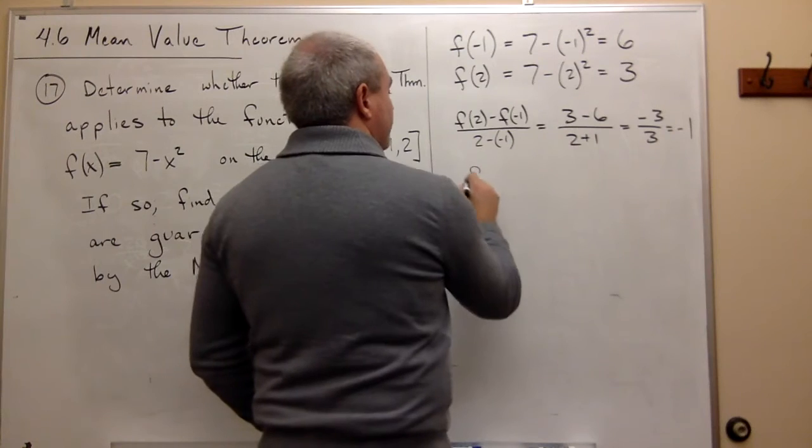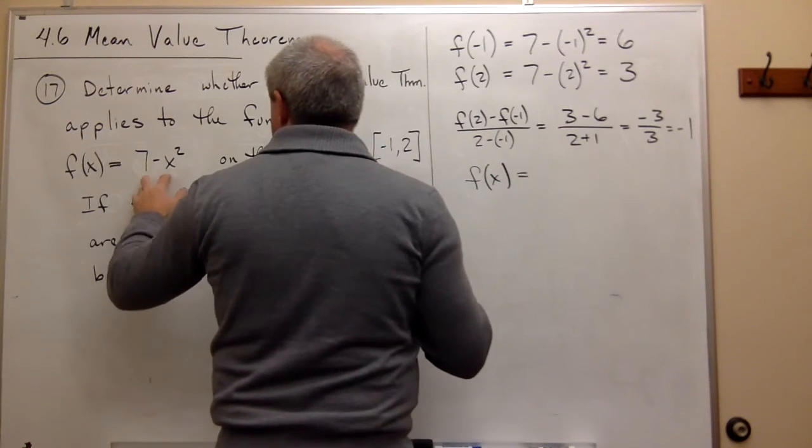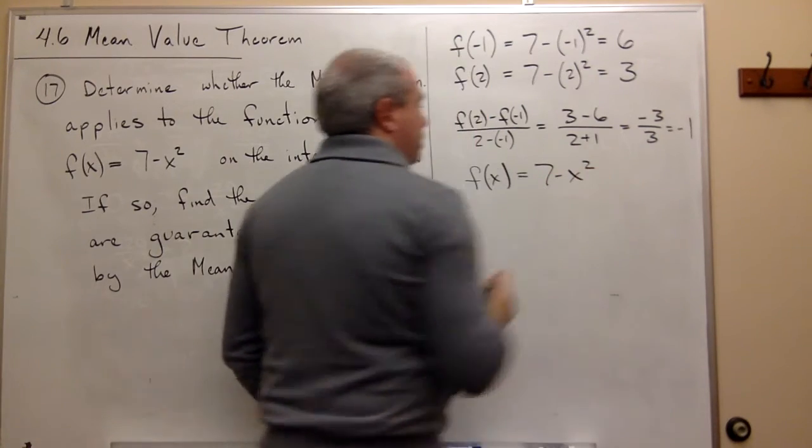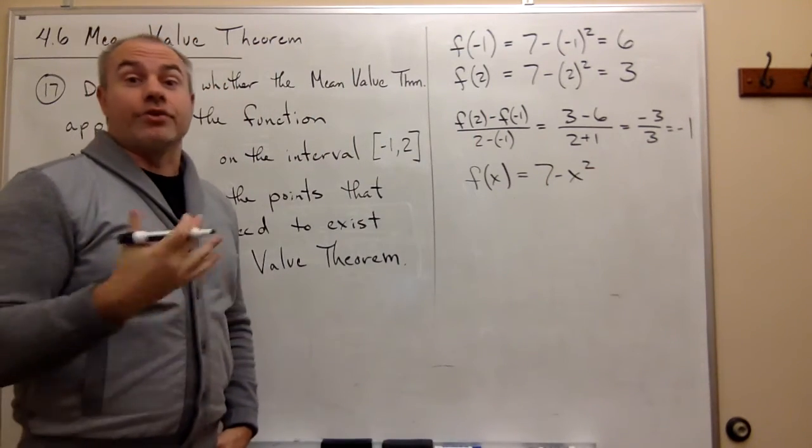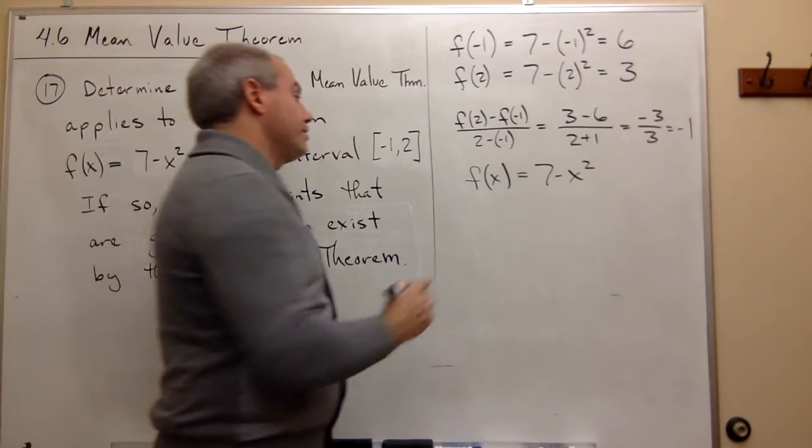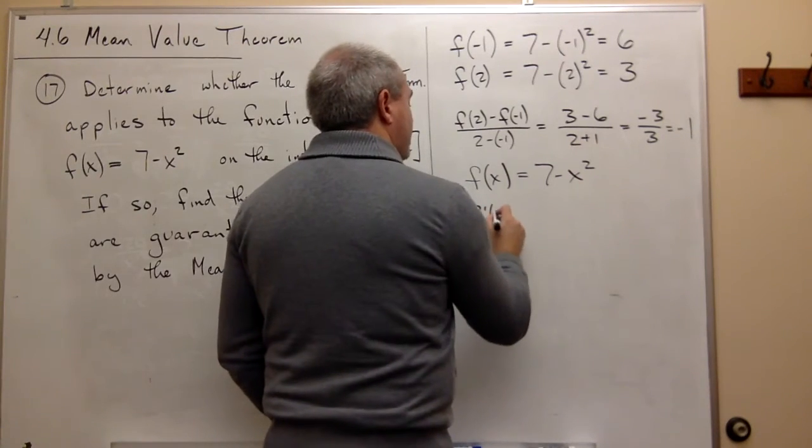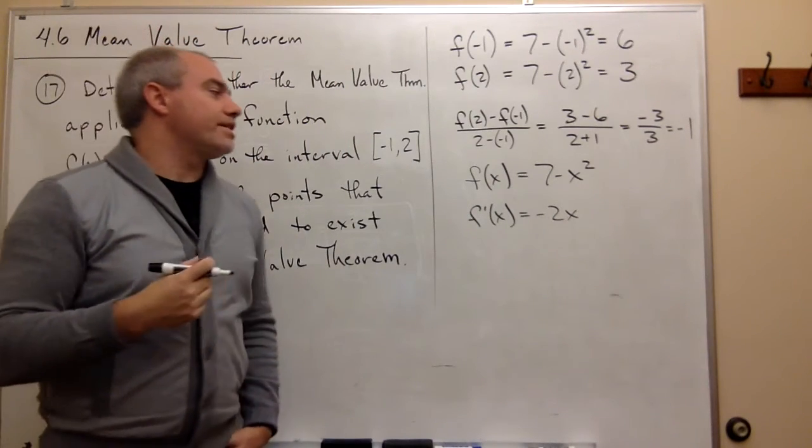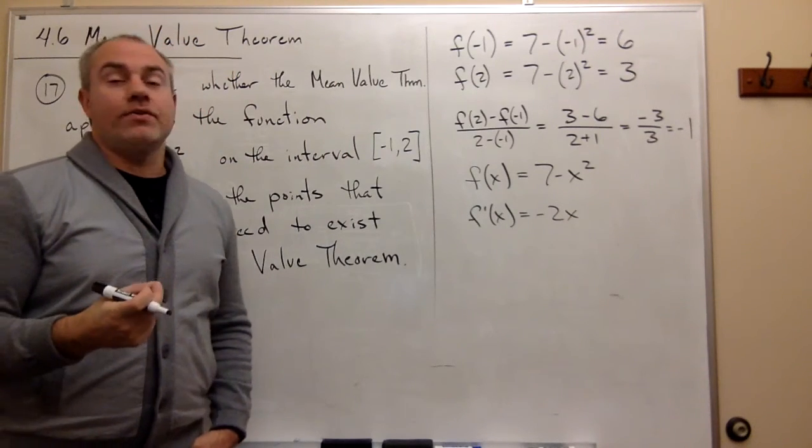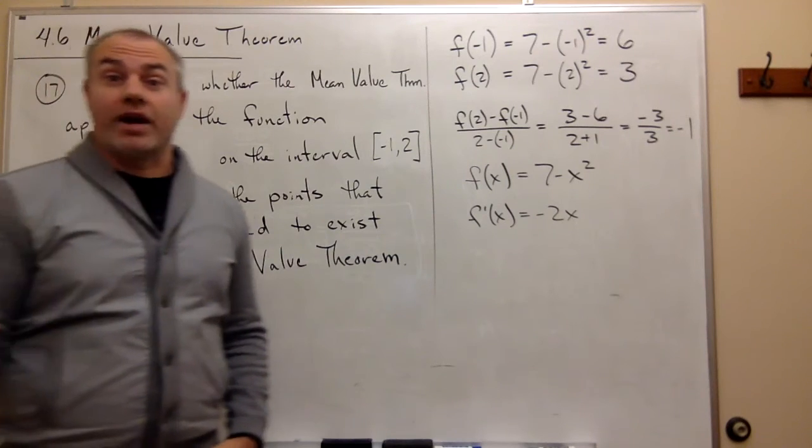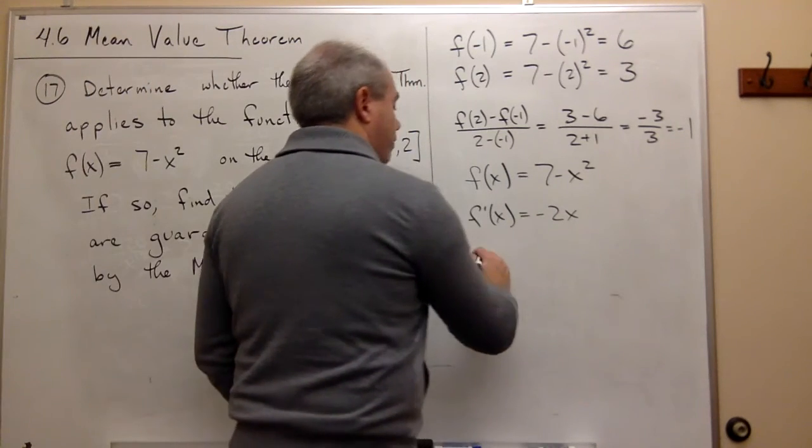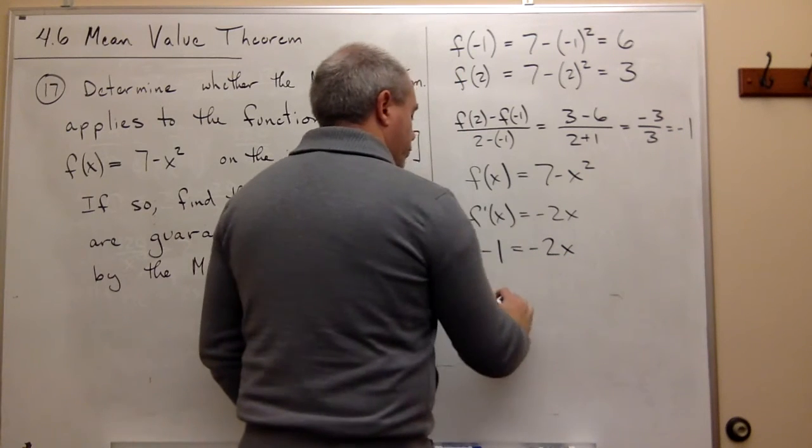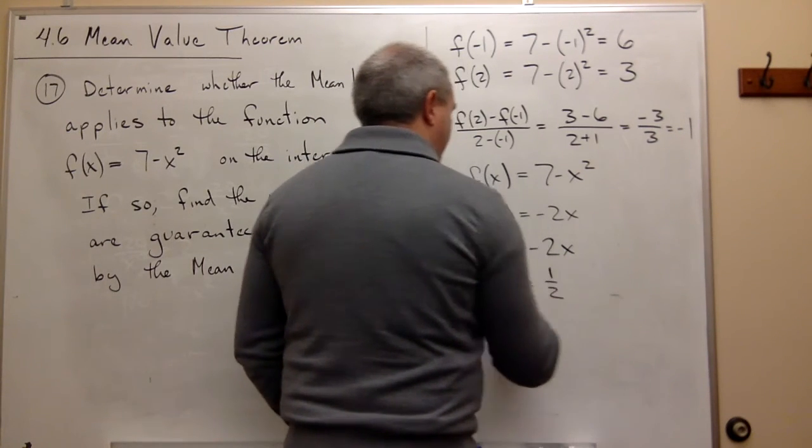So my function is f of x is equal to 7 minus x squared. So I want to take the derivative of that function, so I get that f prime of x is equal to negative 2x. And I want to set that guy equal to negative 1 and solve for x, which is pretty straightforward. So I get negative 1 is equal to negative 2x, which would mean that x would be 1 half.